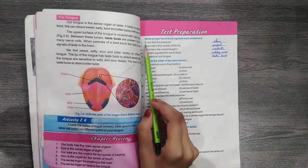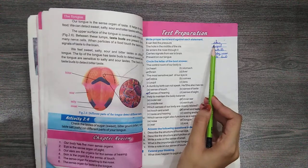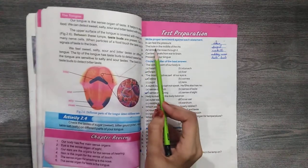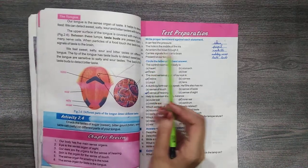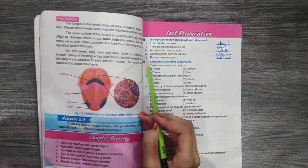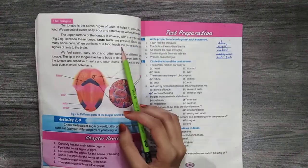Question number 1: It can feel the pressure - the answer is Skin. Question number 2: The hole in the middle of the iris - the answer is Pupil. Question 3: Air enters from the nose through it - the answer is Nostril.